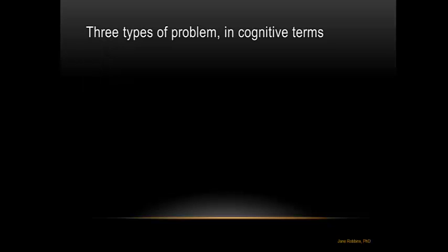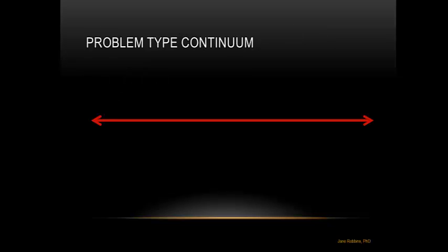We generally talk about three types of problems: structured, semi-structured, and unstructured. While it is difficult to fix problems into strict categories, we can place them loosely along a continuum in problem-solving terms — from less difficult or complex, to more difficult or complex. Let's take each of these one by one.